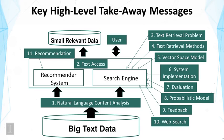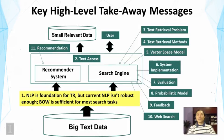First, we talked about natural language content analysis. The main takeaway message is that natural language processing is the foundation for text retrieval. But currently, NLP isn't robust enough, so the bag-of-words representation is generally the main method used in modern search engines, and it's often sufficient for most search tasks. But obviously, for more complex search tasks, we need deeper natural language processing techniques.